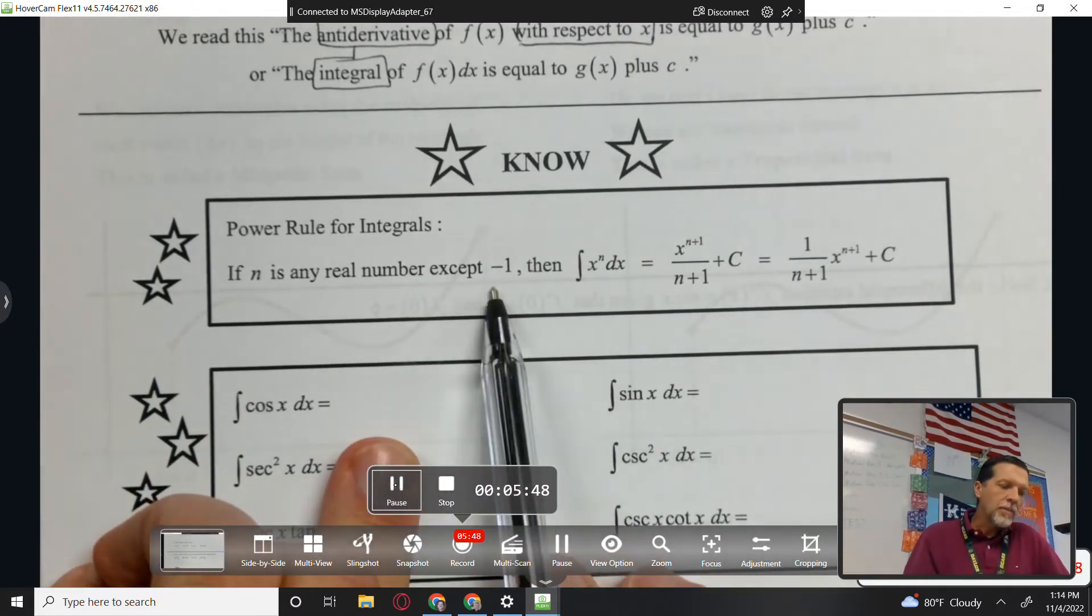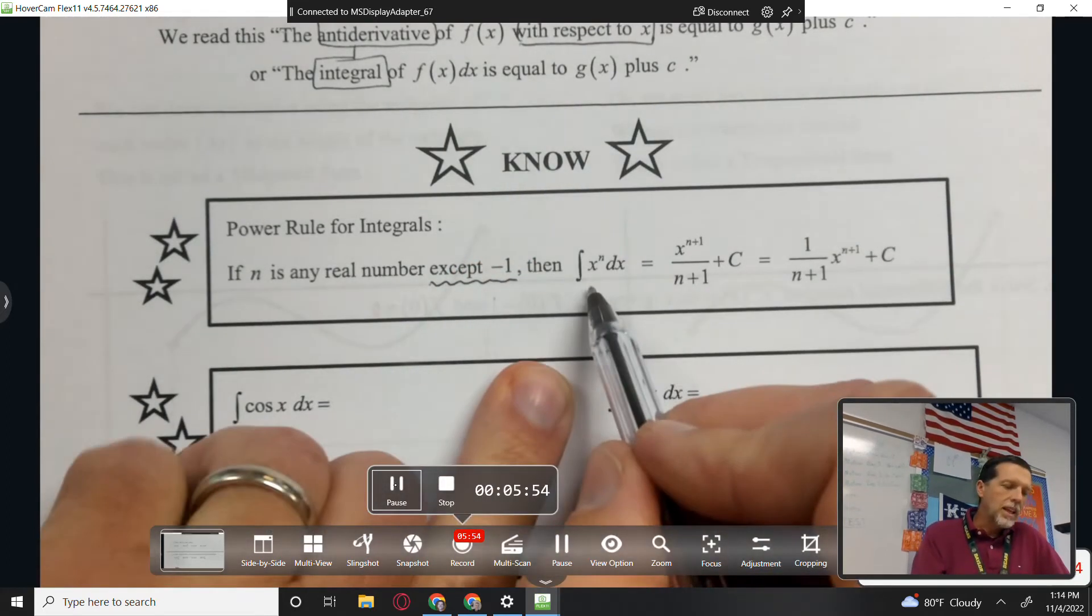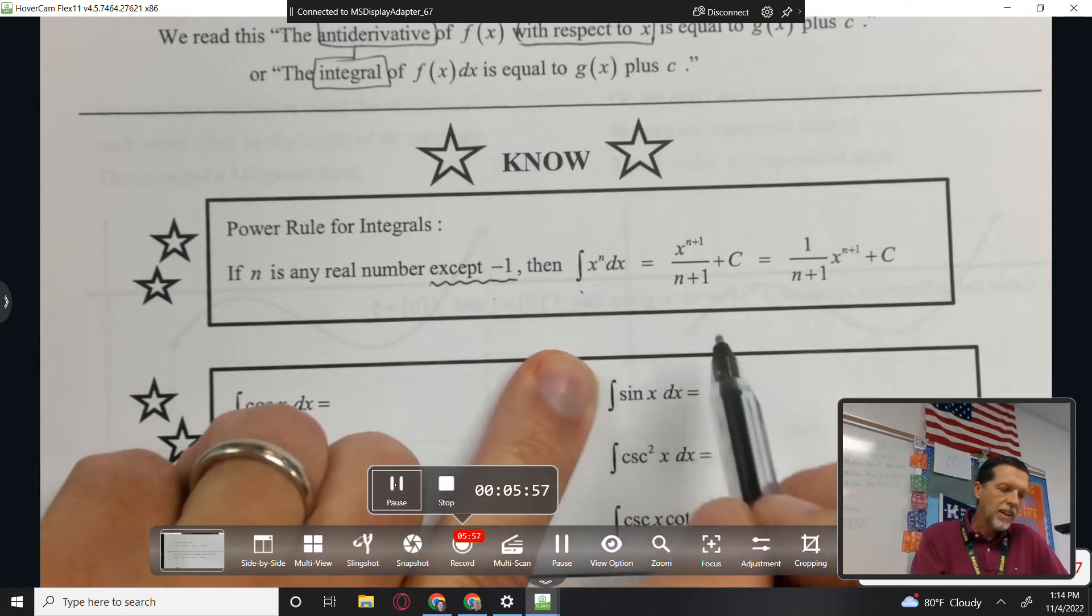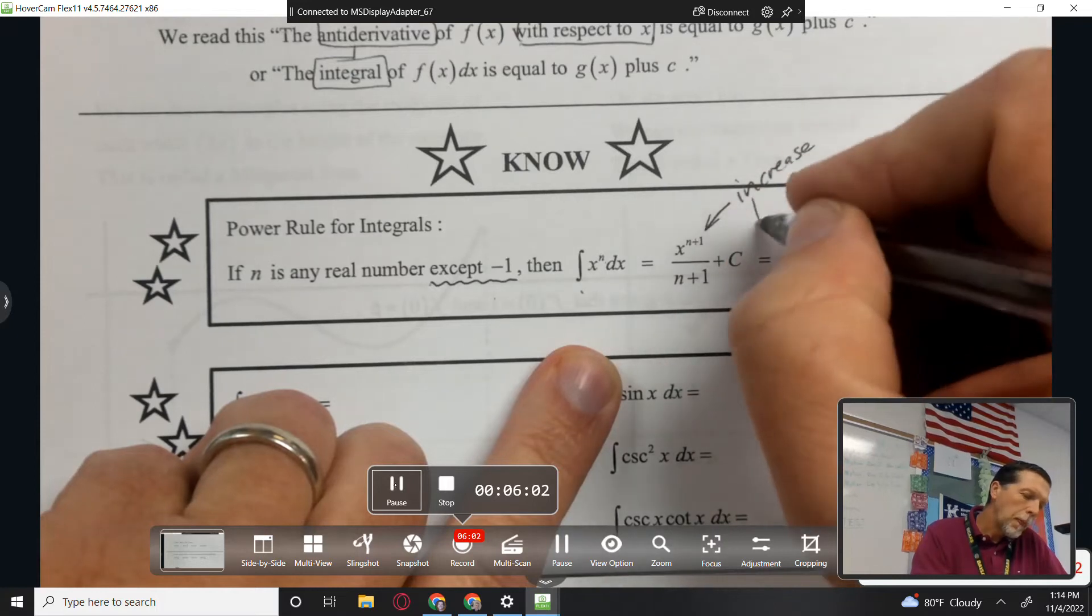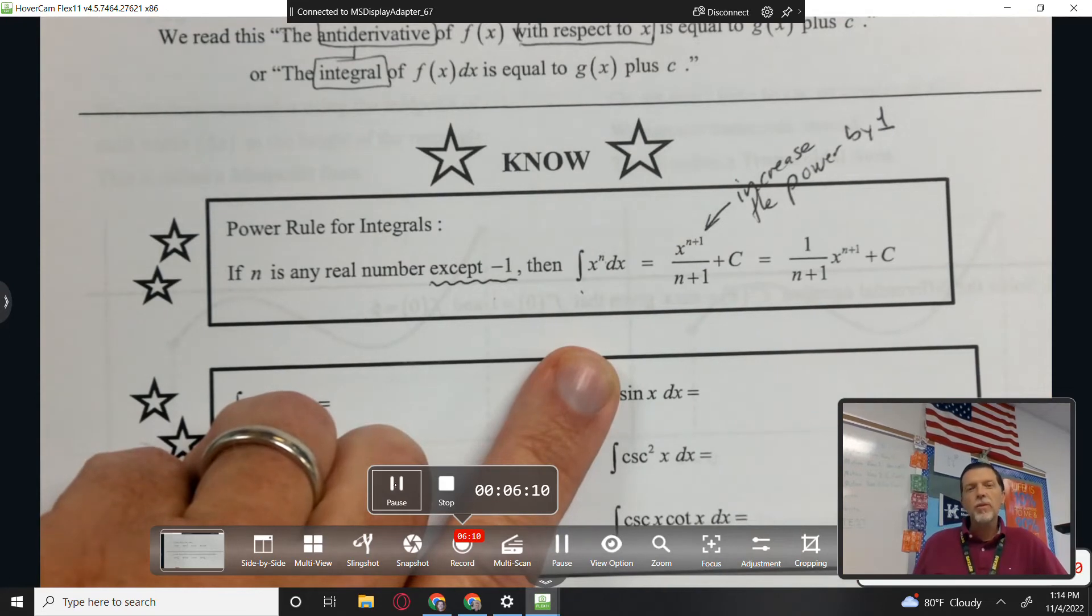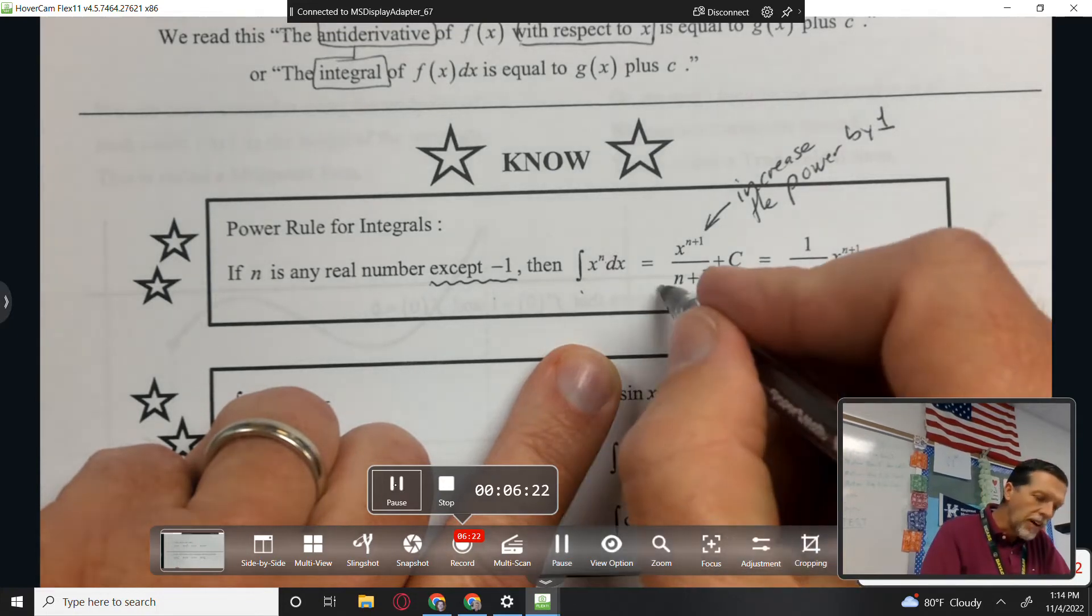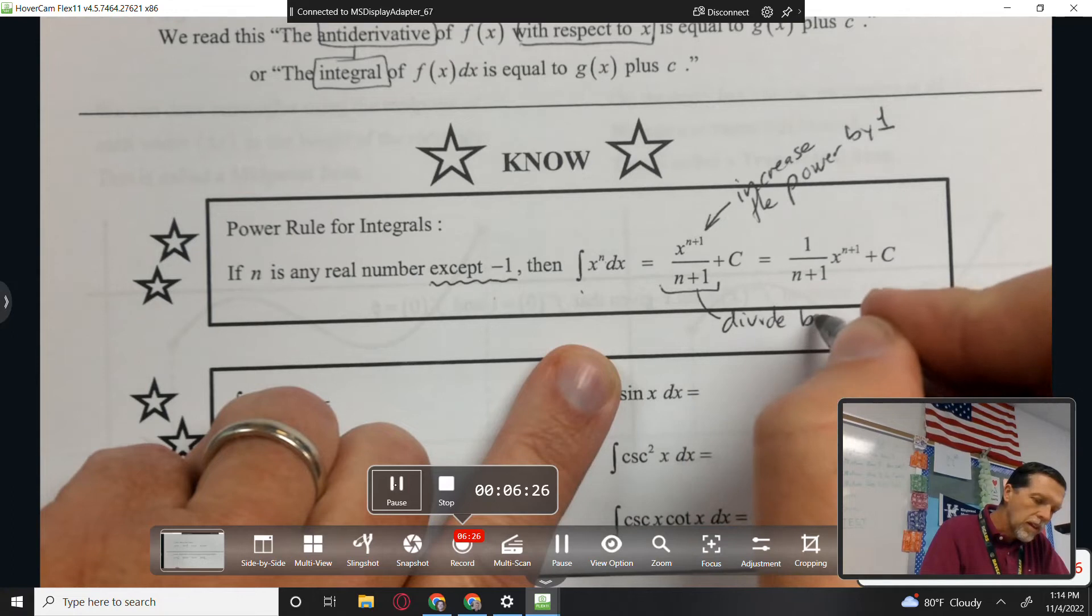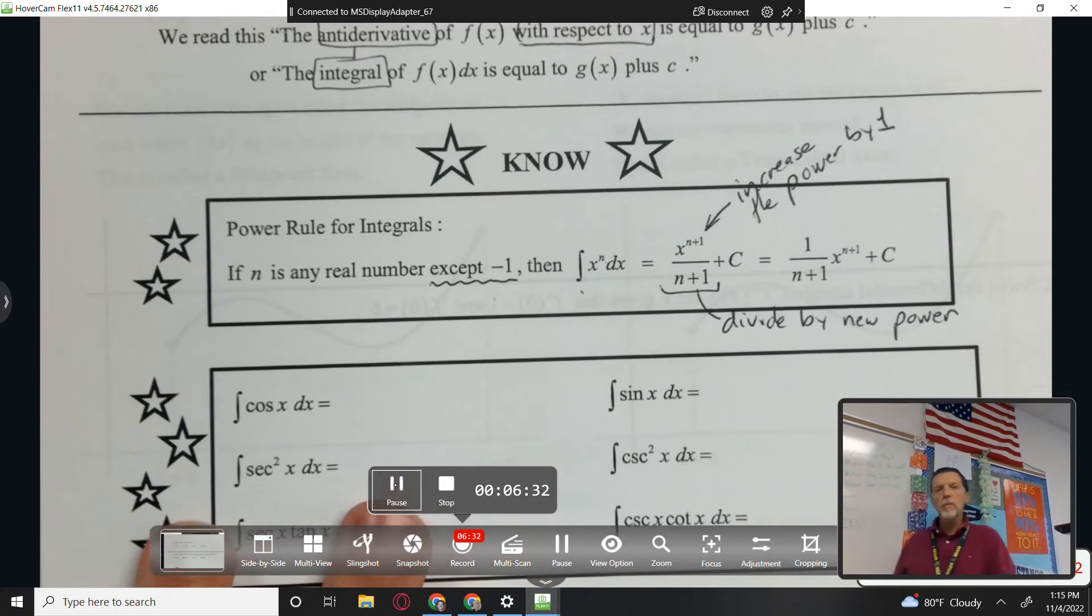If n is any real number except negative 1, that one's tricky, we'll talk about that later. Then the integral, the antiderivative of x to the n, is increase the power by 1. Right? And that makes sense because when you're taking a derivative, you decrease the power by 1. And when you're taking a derivative, you multiply by the old power. Now you're going to divide by the new power.